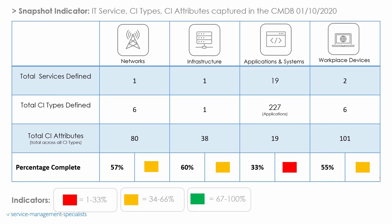Let's now roll this up into a view across all the domains. We've got 57% for networks, 60% for infrastructure, 33% for applications and systems, and 55% for workplace devices. You can actually build this out yourself depending on where you want to get to, but ideally you want to get to 100%, which is your green. At the moment we've got a majority looking at amber, and just our applications and systems looking at red. So it's a really important view.